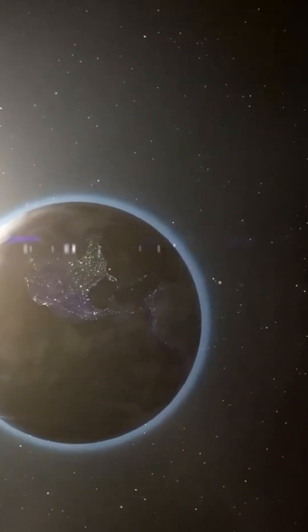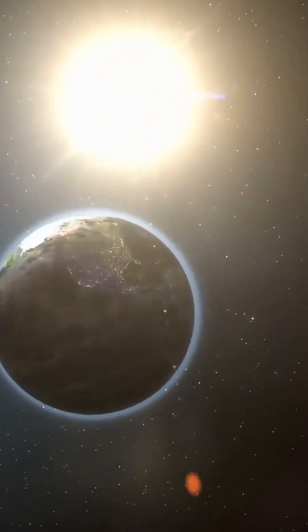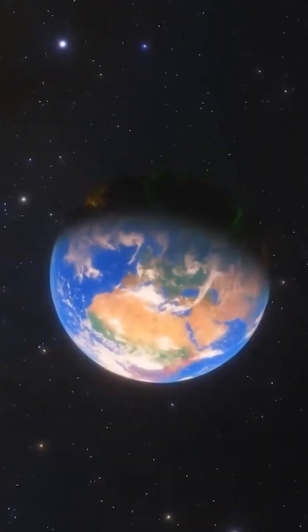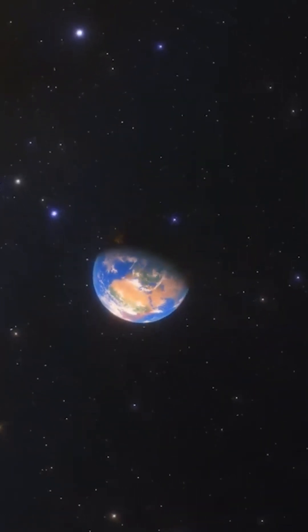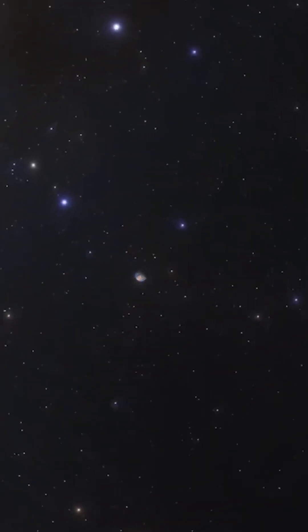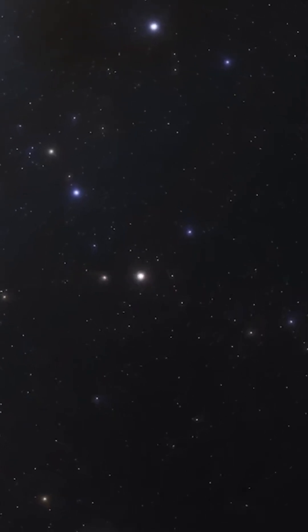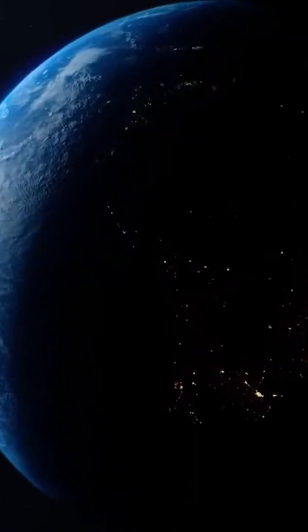Could we survive on a rogue planet? Picture this. One day, without warning, Earth is knocked off its orbit. Maybe it's a rogue planet passing too close. Maybe it's a catastrophic gravitational event. Regardless of the cause, the result is unthinkable.